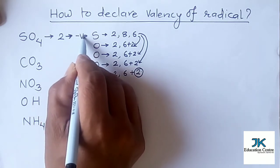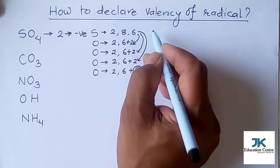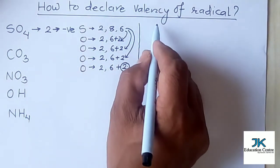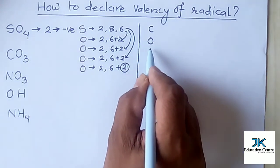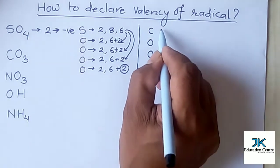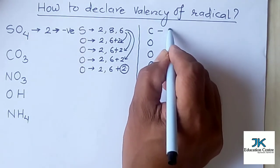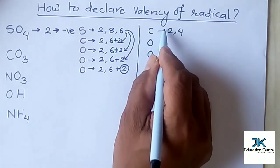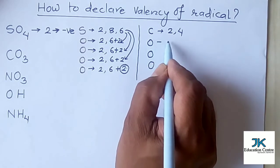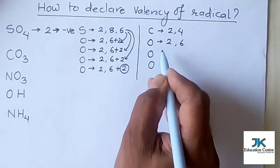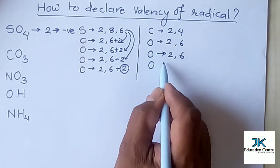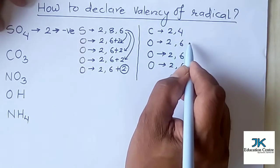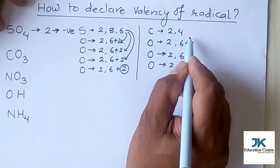Now let's talk about carbonate. Carbonate has one carbon atom and three oxygen atoms. Carbon's atomic number is 6, so its electronic configuration is 2 and 4 — the last orbit consists of four electrons. Oxygen, as previously mentioned, has configuration 2 and 6 — and similarly for each of the three oxygen atoms in carbonate.